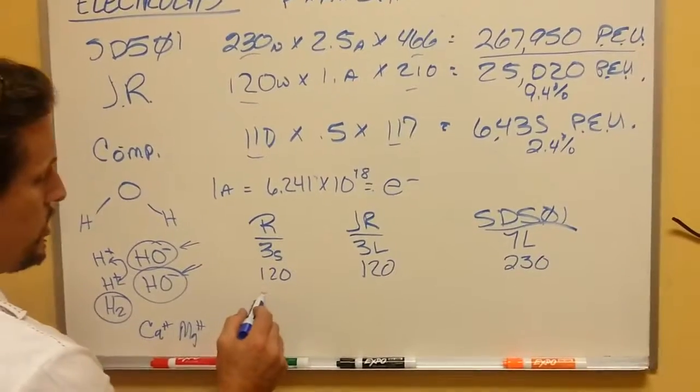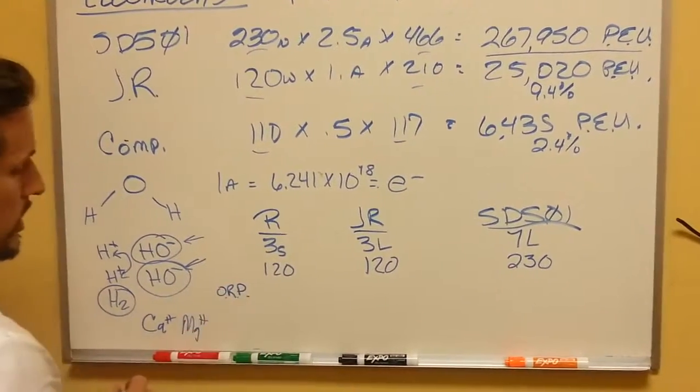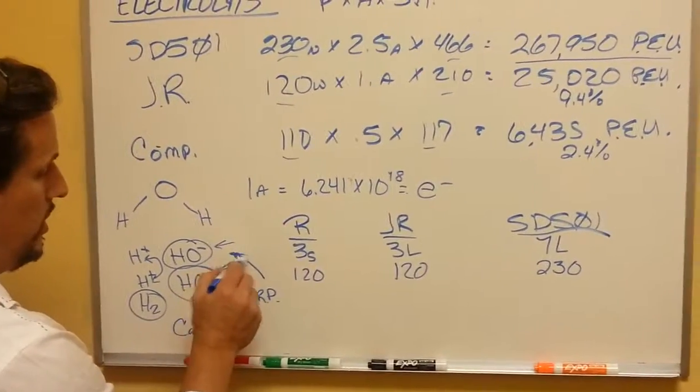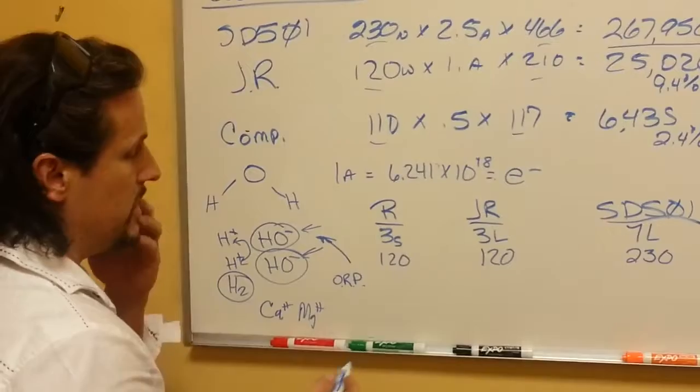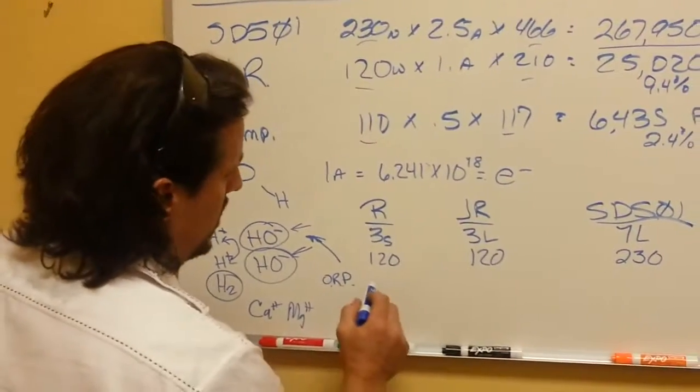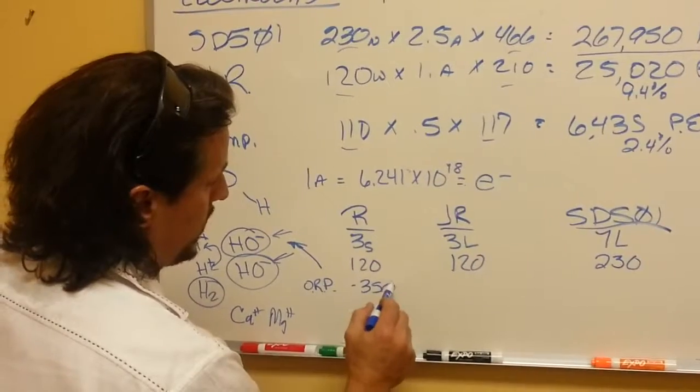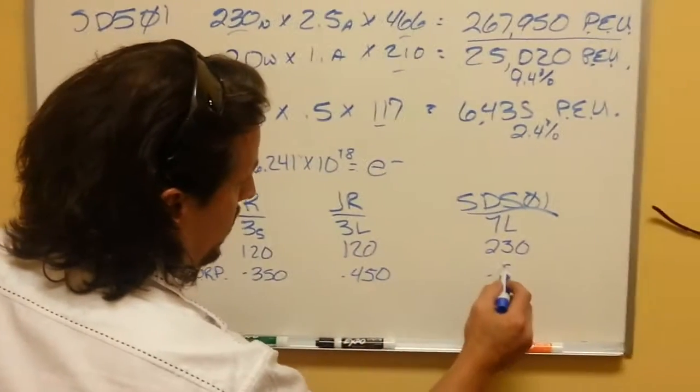This produces an ORP. That means oxidation reduction potential. It's actually a millivoltage on the water, but it's the ability to act as free radical scavengers, energize the cells. And this is negative 350, negative 450, and negative 800.